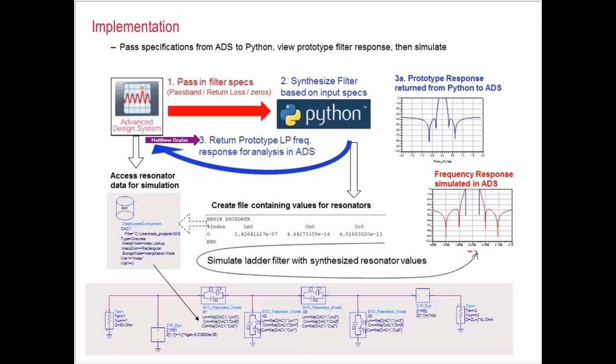And what it will return is the low pass prototype response. So it will send me the frequency response of the low pass prototype that it generates. At the same time, it's also going to make a file. So it will do that in the background. And this file is going to have the elements of each of the filter components in it. And so I can access that in simulation using a data access component and just preload those values directly into my simulation. So all I need to do is hit simulate and I have the simulated response of the ladder network.